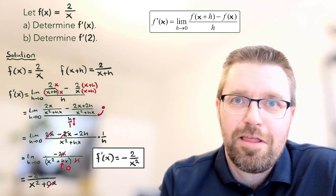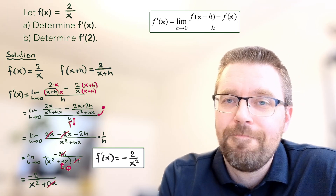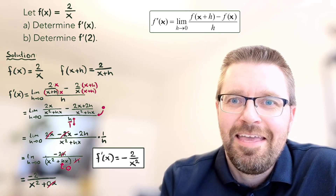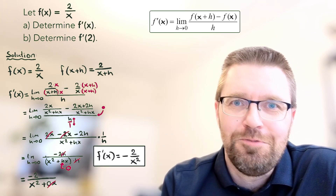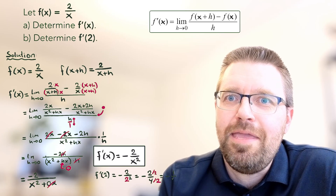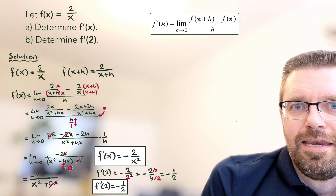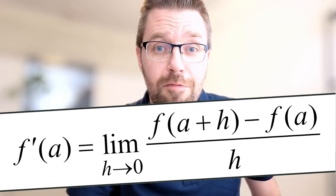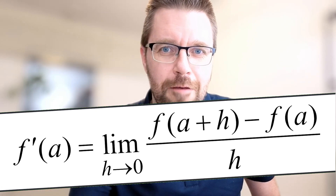In the next question, we replace x with 2 and calculate the slope — the derivative or instantaneous rate of change — when x equals 2. After calculation, the answer is negative one half. If you liked this video, please give me a thumbs up and write a comment. See you in the next one.